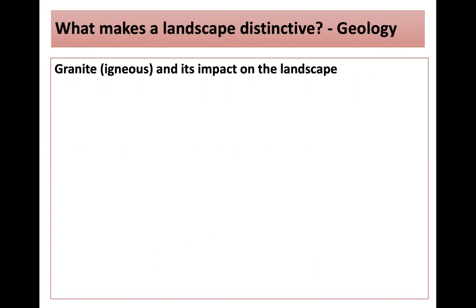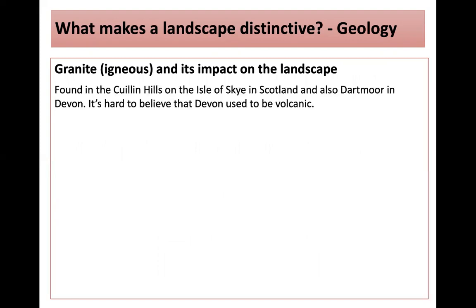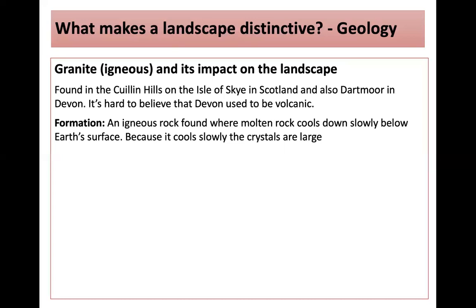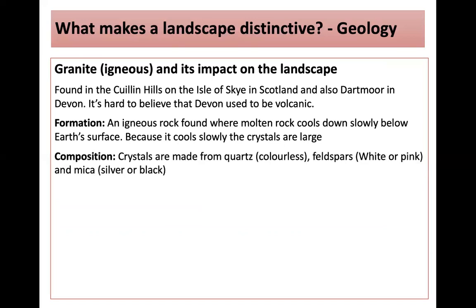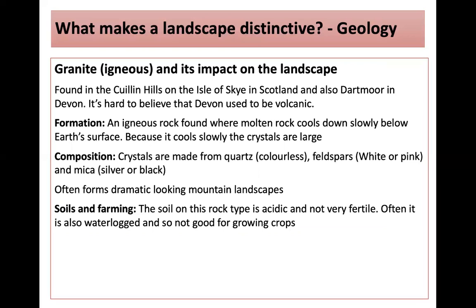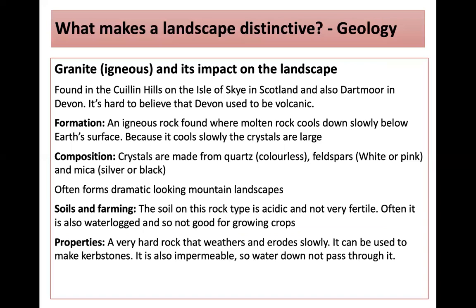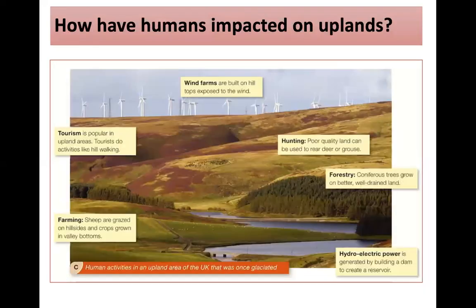Granite, however, is igneous. It's found in the Cullins on the Isle of Skye in Scotland and also Dartmoor in Devon — it's hard to believe Dartmoor used to be volcanic. It's an igneous rock formed where molten rock cools slowly below the Earth's surface. Because it cools slowly, the crystals are large, made from quartz, feldspar and mica, and it often forms dramatic mountain landscapes. The soil on this rock type is acidic, not very fertile, often waterlogged and not good for growing crops. It's a very hard rock that weathers and erodes slowly. It can be used to make kerbstones and kitchen worktops, and it's impermeable, so water does not pass through it.